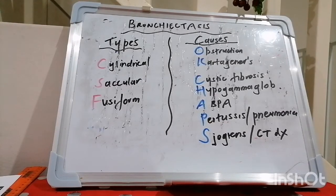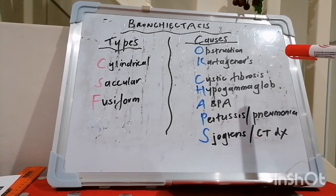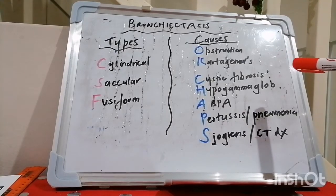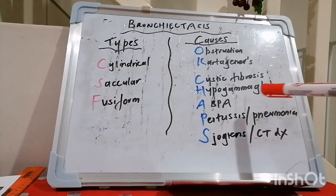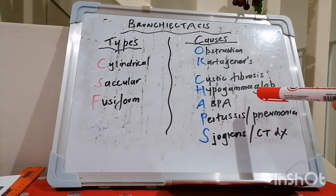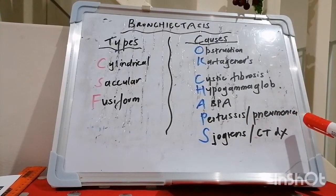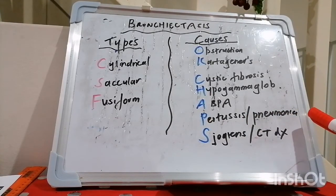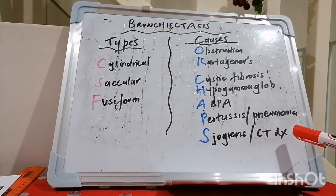O stands for obstruction of the bronchus, K is for Kartagener's syndrome, C is for cystic fibrosis, H for hypogammaglobulinemia, ABPA for allergic bronchopulmonary aspergillosis, P stands for pertussis or numerous childhood chest infections and pneumonia, and S is for Sjogren's and connective tissue disease.